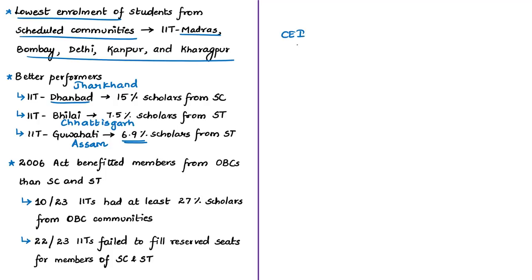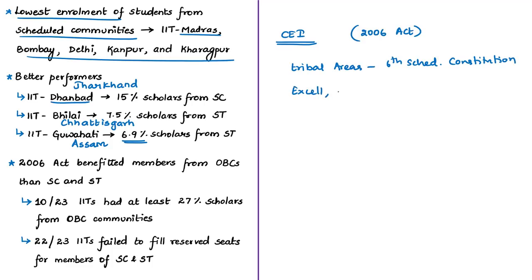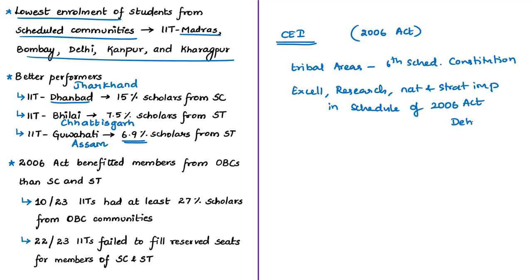Now let's see which central education institutions are currently exempted from the Central Educational Institutions (Reservation in Admission) Act of 2006. Any central education institution established in tribal areas referred to in the Sixth Schedule to the Constitution is exempted. The Act also exempts institutions of excellence, research institutions, and institutions of national and strategic importance that are specified in the Schedule of the 2006 Act — such as Homi Bhabha National Institute, Tata Institute of Fundamental Research, Physical Research Laboratory, National Brain Research Center, and Indian Institute of Remote Sensing. IITs do not fall under this schedule. Minority educational institutions and programs at postdoctoral level are also exempted.